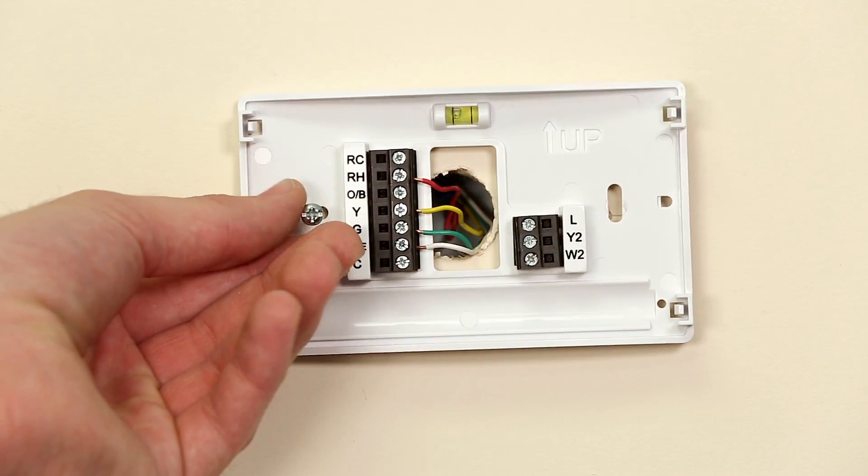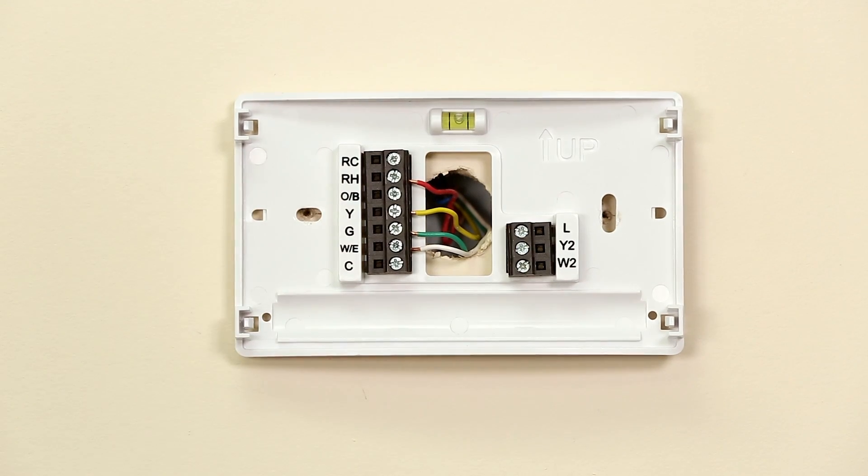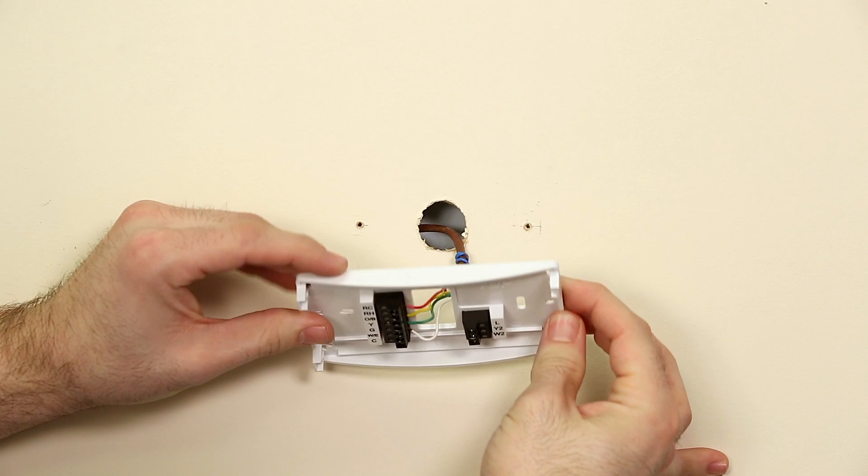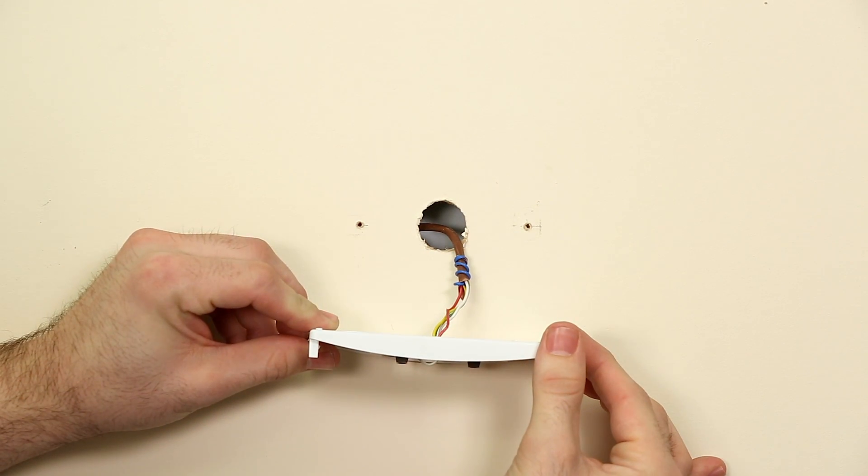While leaving the wires connected to the base plate, unscrew the base plate from the wall and gently pull the wires and base plate away from the wall slowly. You should be able to pull the wires and wall plate out several inches. As you are pulling the base plate away from the wall, look for a wire bundle.